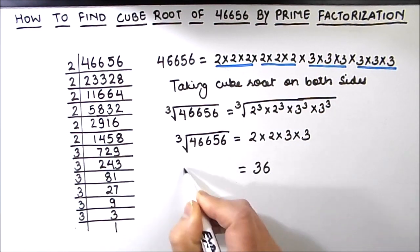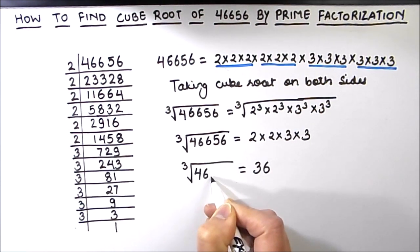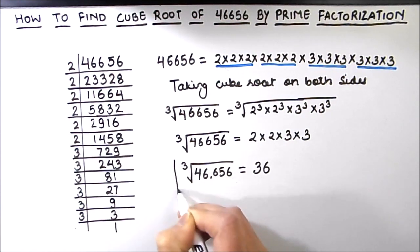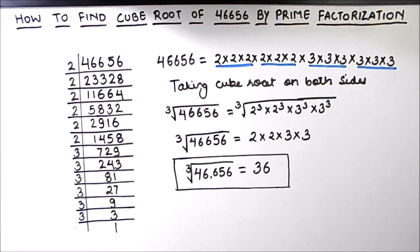So the cube root of 46,656 is 36. This is our final answer. In this way you can find the cube root of any number using the prime factorization method. I hope this video is helpful to you. If you like the video, please hit the like button and subscribe to my channel for more math videos. Thanks for watching.